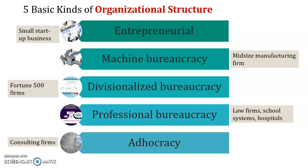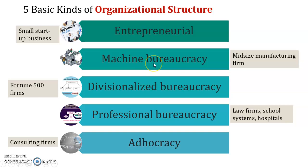We meet again. This is the second video for Topic Three, so we continue with the five basic kinds of organizational structure. The first one is entrepreneurial, the second one is machine bureaucracy, the third one is divisionalized bureaucracy, the fourth is professional bureaucracy, and the last one is adocracy.